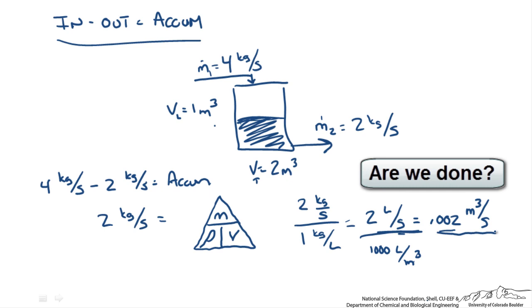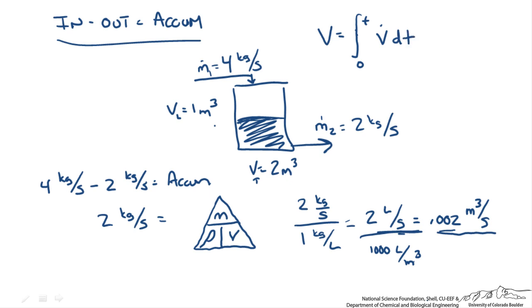We know that we need to fill 1 meter cubed until this tank is full, that is the empty space. So in this case we could write an integral balance where volume is going to be the volumetric flow rate times some time interval. In this case, we write this out. 0.002 meters cubed per second, dt. And we know 1 meter cubed equals 0.002 meters cubed per second times t. So t is going to equal 500 seconds.